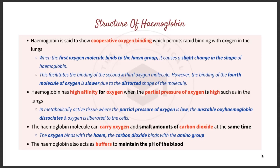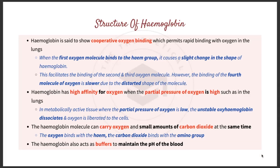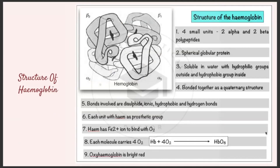Hemoglobin also has a high affinity for oxygen when the partial pressure of oxygen is high, such as in the lungs. In metabolically active tissue where the partial pressure of oxygen is low, the unstable oxyhemoglobin dissociates and oxygen is liberated to the cells. This is important because oxygen is needed for cellular respiration. Hemoglobin can also carry oxygen and small amounts of carbon dioxide simultaneously, and it acts as a buffer to maintain the pH of the blood.